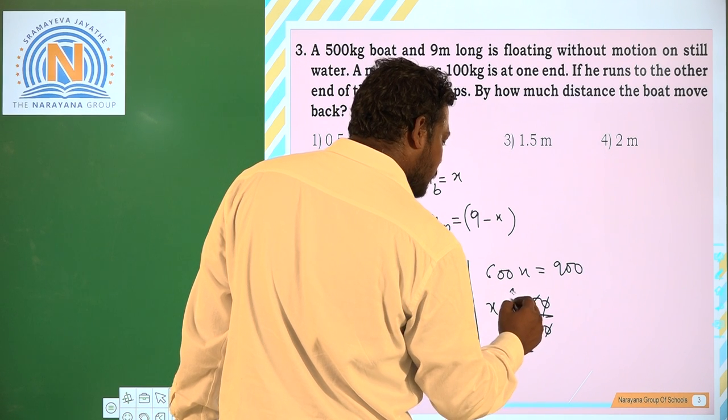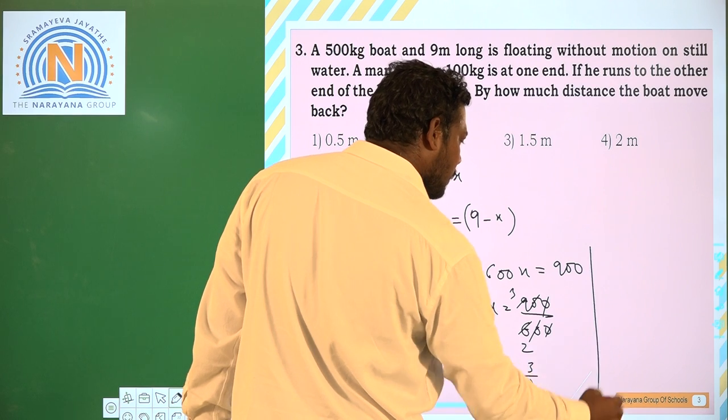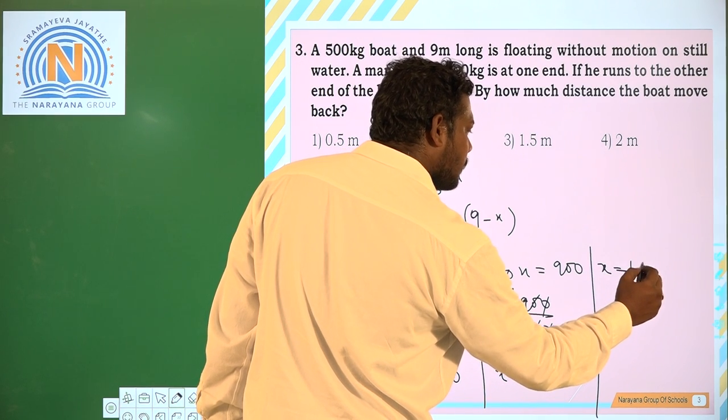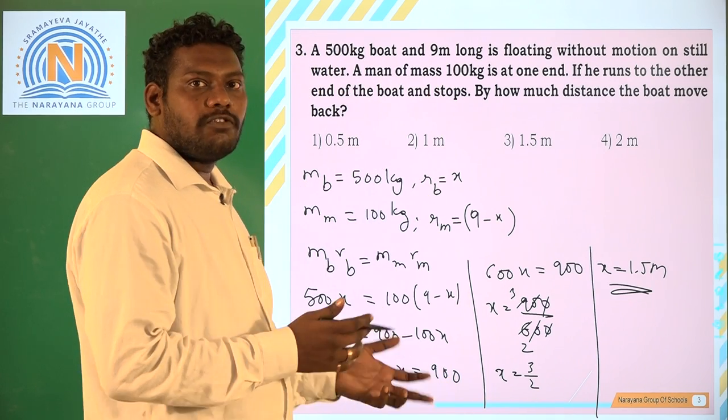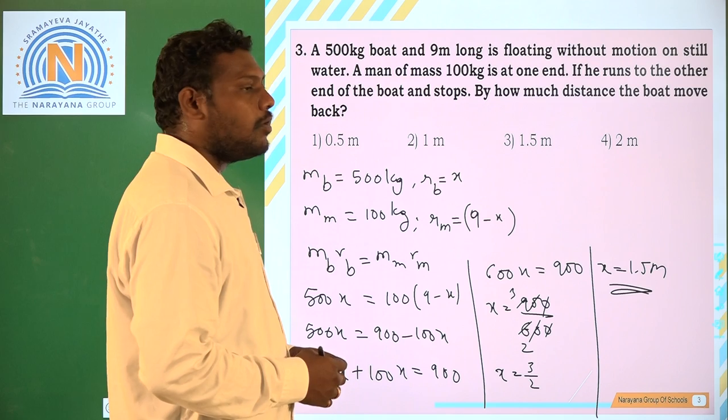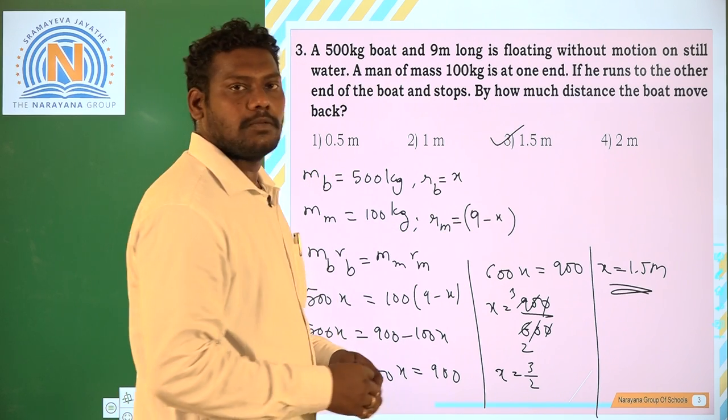So x = 3/2. Or x = 1.5 meters. So the boat moves backwards, how much the boat moves backwards is 1.5 meters.